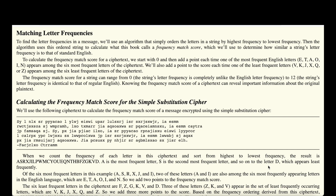The algorithm orders letters in a string by highest frequency to lowest. We start with E, T, A, and O and end with the least frequent letters like X, Q, and Z. To do that we calculate a frequency match score for ciphertext, starting at zero. We add a point each time one of the most frequent English letters such as E, T, A, or O appears, and also each time one of the least frequent letters such as J, X, or Q appears.